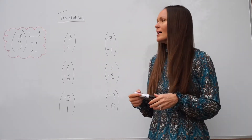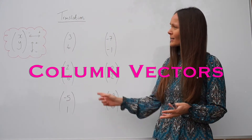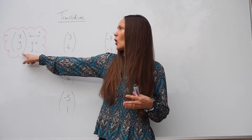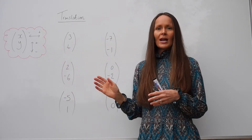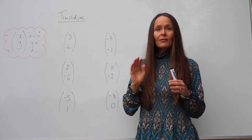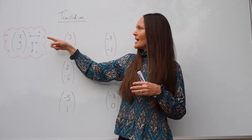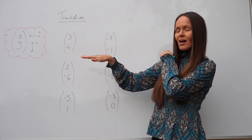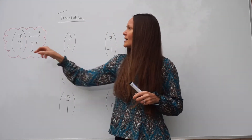Before we have a go at doing a translation or describing one, I want to show you column vectors. These are generally what's given to you in a translation question. The column vector shows you which direction to move the shape. The number at the top means left or right — if it's positive, you move to the right; if it's negative, you move to the left, like the x-axis.